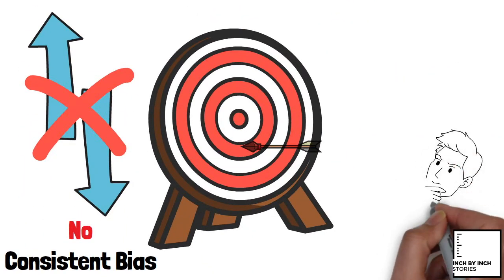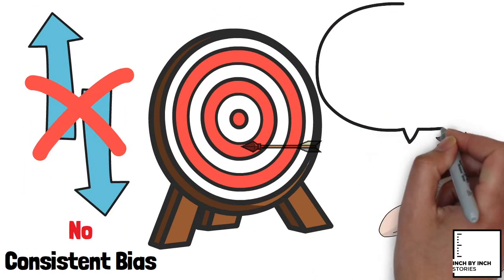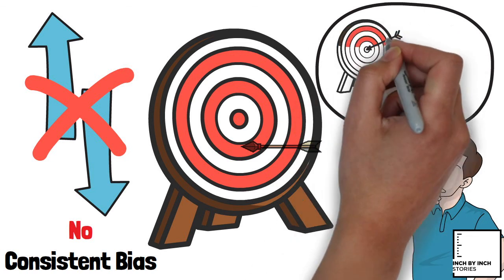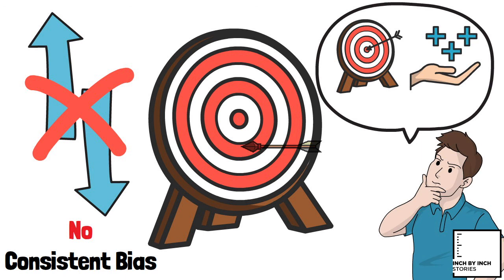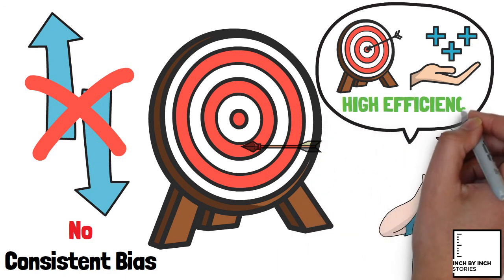The power of estimation is amazing. The ability to construct close to accurate measurements with limited information is such a useful skill to have because it's encountered so often in the real world. This proves the high efficiency of the Fermi problem.